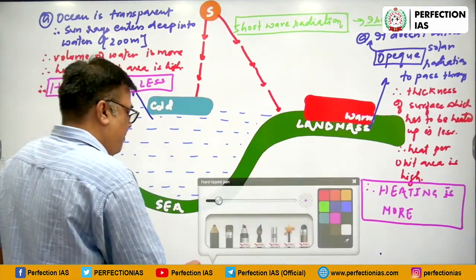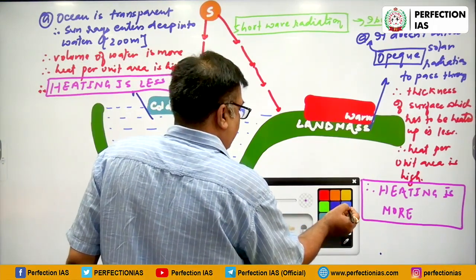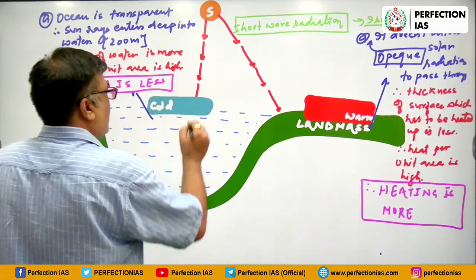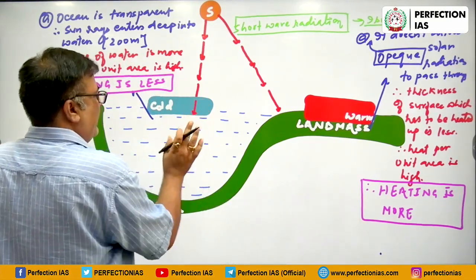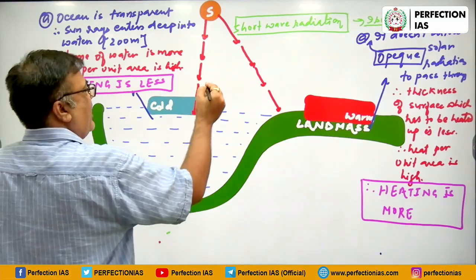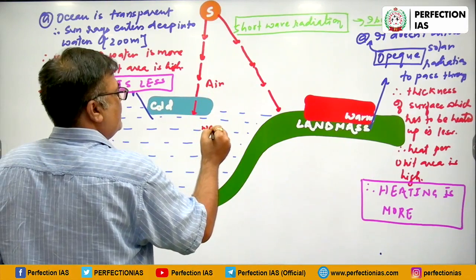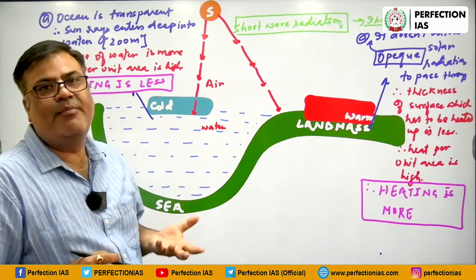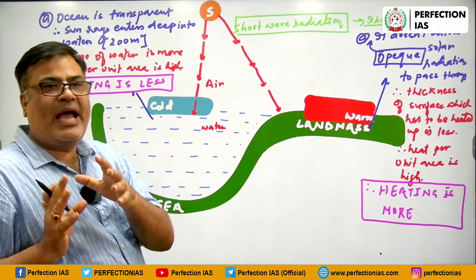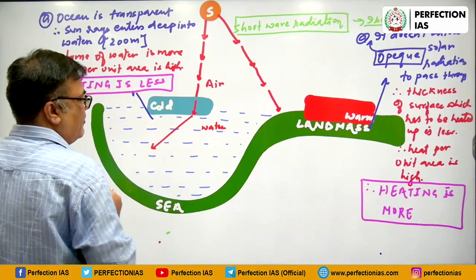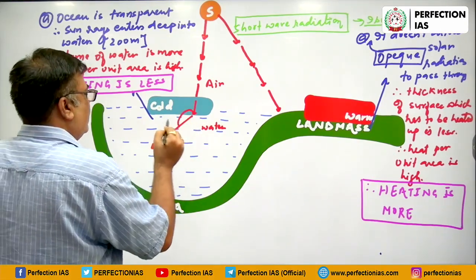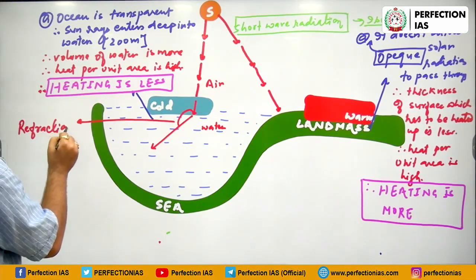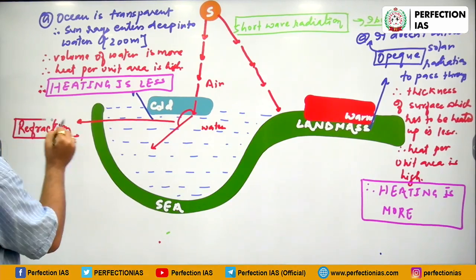Another point is that when insolation is entering the water, because of the difference in medium, it refracts. This refraction means the volume through which heat is spread is increased, and so heat per unit area is further reduced. Also, the distance from the source is high, and if distance from the source of heat is high, then heating is less.